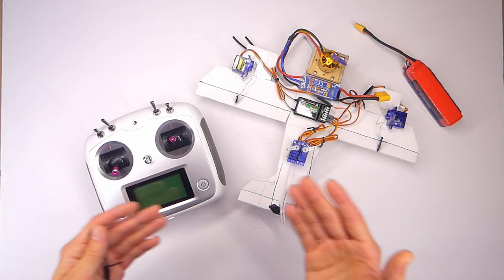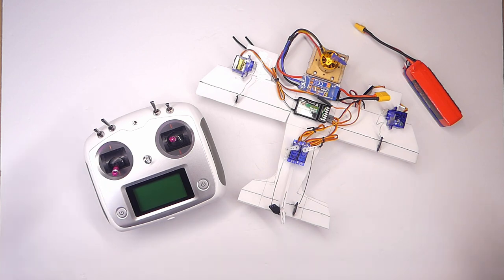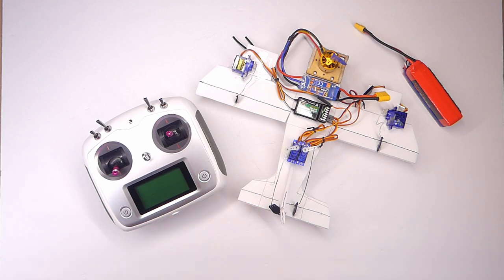I have other videos about binding FlySky transmitters, but I want to show you on the i6S just in case you were wondering.